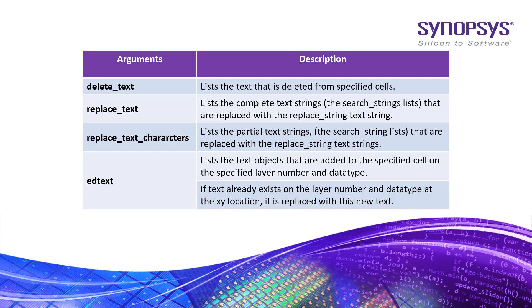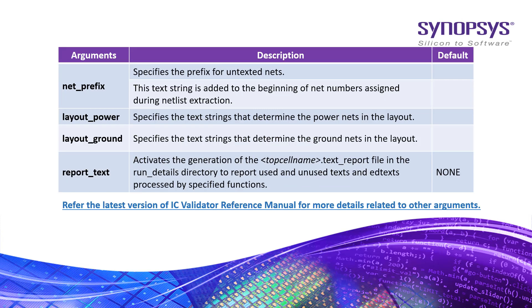If text already exists on the layer number and datatype at the XY location, it is replaced with this new text. The net_prefix argument specifies the prefix for untexted nets.